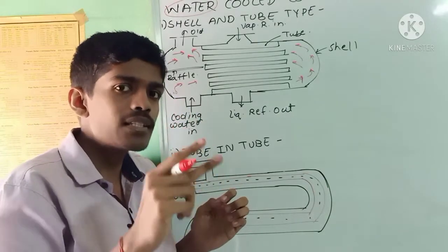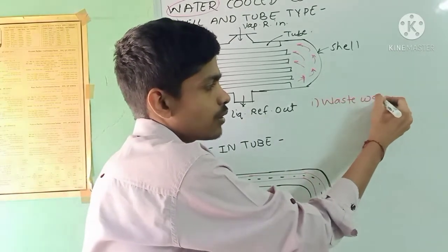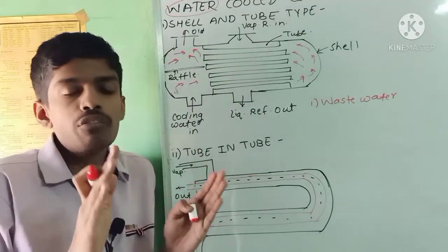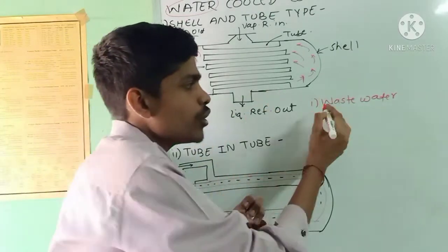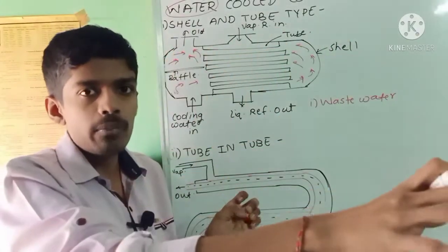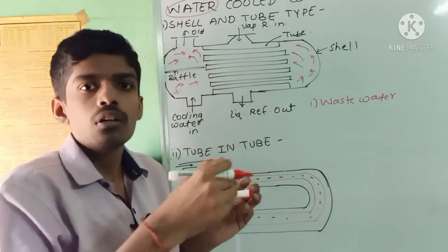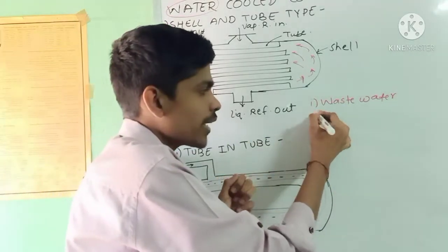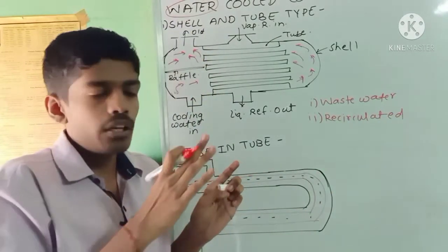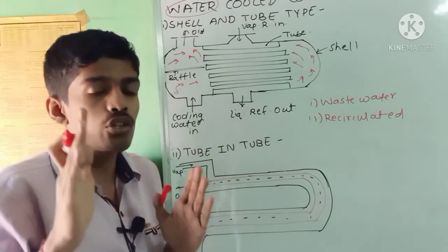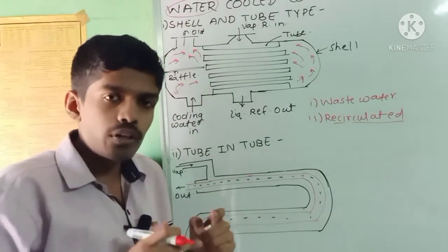There are two systems by which we can send water to the condenser. The first is the waste water system — if a plant is located where plenty of water is available, water from the city main is sent to the condenser and after use is discharged to a river or sewage. The second is the recirculated water system — used where water is scarce, in which the water sent to the condenser is reused after use.